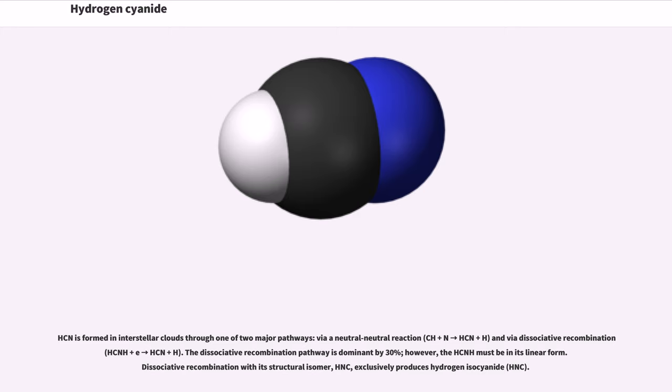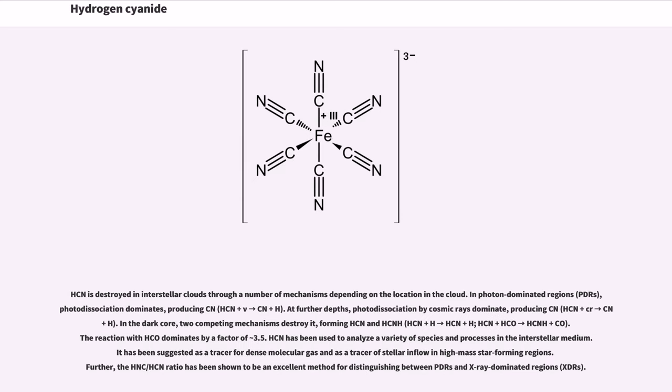HCN is formed in interstellar clouds through one of two major pathways: via a neutral-neutral reaction and via dissociative recombination. The dissociative recombination pathway is dominant by 30 percent; however, the HCNH+ must be in its linear form. Dissociative recombination with its structural isomer HNC+ exclusively produces hydrogen isocyanide.